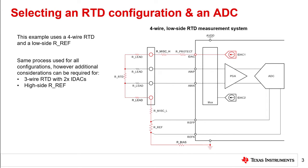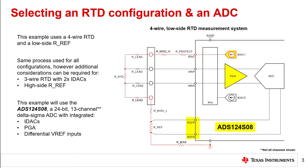Some of these considerations will be discussed in this module. Refer to the Precision Labs module on challenges with three wire RTD systems for additional information. This example uses the ADS124S08, a 24-bit, 13-channel Delta Sigma ADC. This ADC is selected because it includes dual matched IDACs for RTD biasing, a low noise PGA to amplify small signals, and differential reference voltage inputs to implement a ratiometric reference. As a result of the high integration of this device, the ADS124S08 is commonly used in RTD measurement systems.